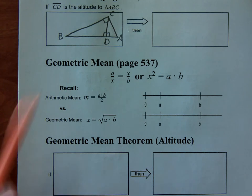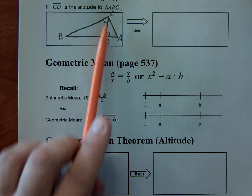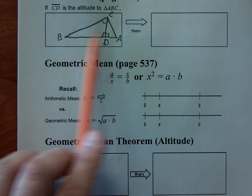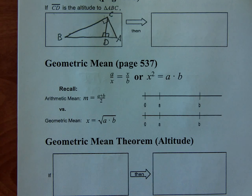Alright, so it says here 8.1, if CD is the altitude of triangle ABC, meaning it makes a right angle and goes from a vertex down, then we're going to get a set of triangles. How many triangles do you see in this picture? Two? Three?